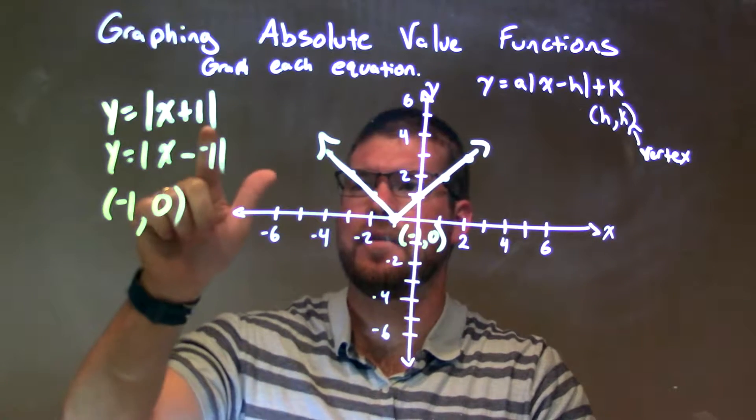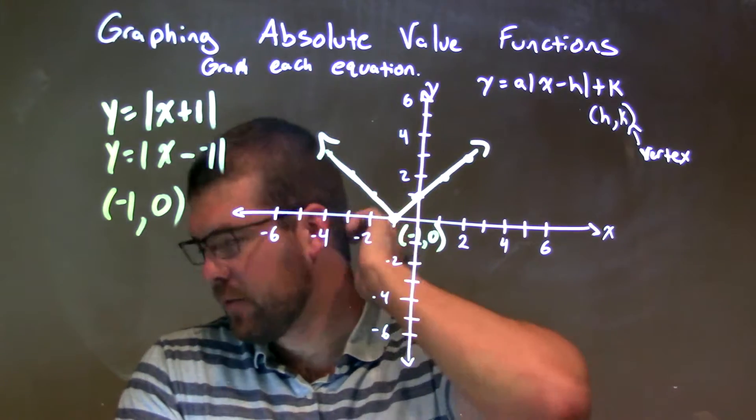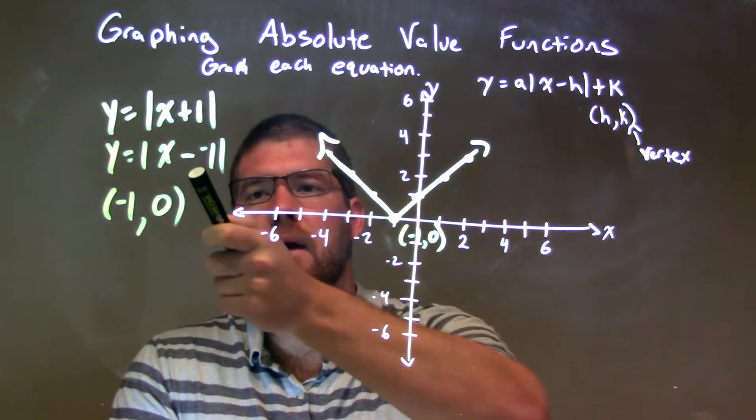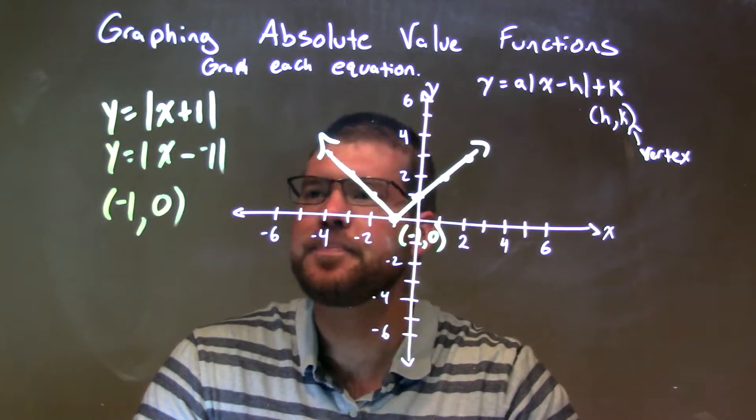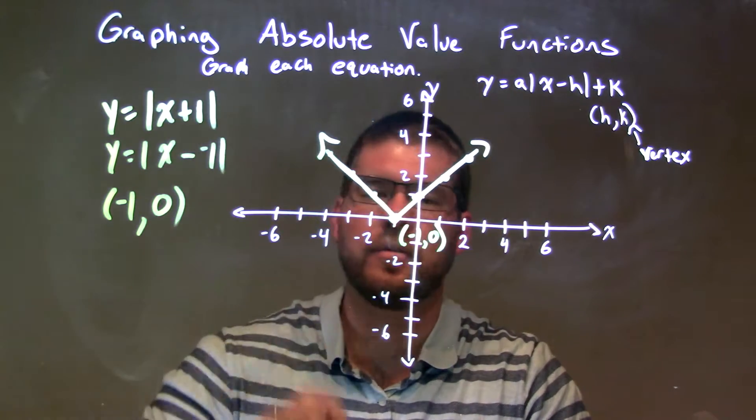I like to just get it from here and see that h should be negative 1, kind of the opposite of the absolute value. But if you want to write it as x minus negative 1, that's what we find. So h is negative 1, our k is 0. Our coordinate point of the vertex is negative 1 comma 0.